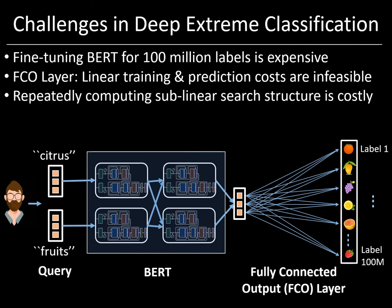In order to motivate the DeepXML framework, let me highlight some of the challenges of deep extreme multi-label learning. Consider a naive architecture where we have connected a feature extractor such as BERT to a classifier such as a fully connected output layer with 100 million labels. The first challenge is that fine-tuning BERT and similar feature extractors for an extremely large number of labels is very expensive. Second, performing the forward pass or doing gradient backpropagation through a fully connected output layer with 100 million labels is simply out of the question — even if it were to take just one millisecond to evaluate a label output, it would take more than a day to evaluate all 100 million label outputs. Thus, making predictions on even a single test point would take more than a day while training would take months.